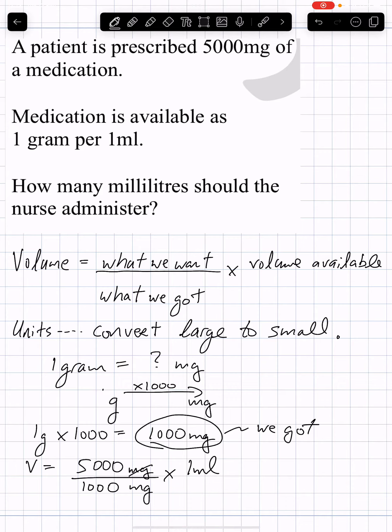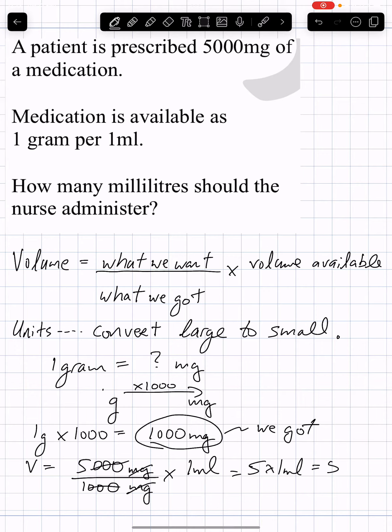The mg units cancel. 5,000 divided by 1,000 — we can divide above and below by 1,000 — gives us 5 over 1, which is 5. So 5 times 1 mL equals 5 mL.